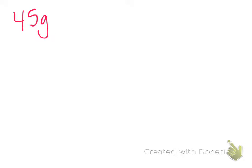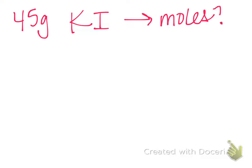Now we need to review conversions: grams to moles, moles to grams, grams to molecules, molecules to moles. What's the format we use with those? T-charts — everyone's favorite. T-charts are going to be a big tool for us when we do our conversions. Let's review potassium iodide. Is the formula balanced? Potassium is +1 and iodide is −1, so we're good to go.